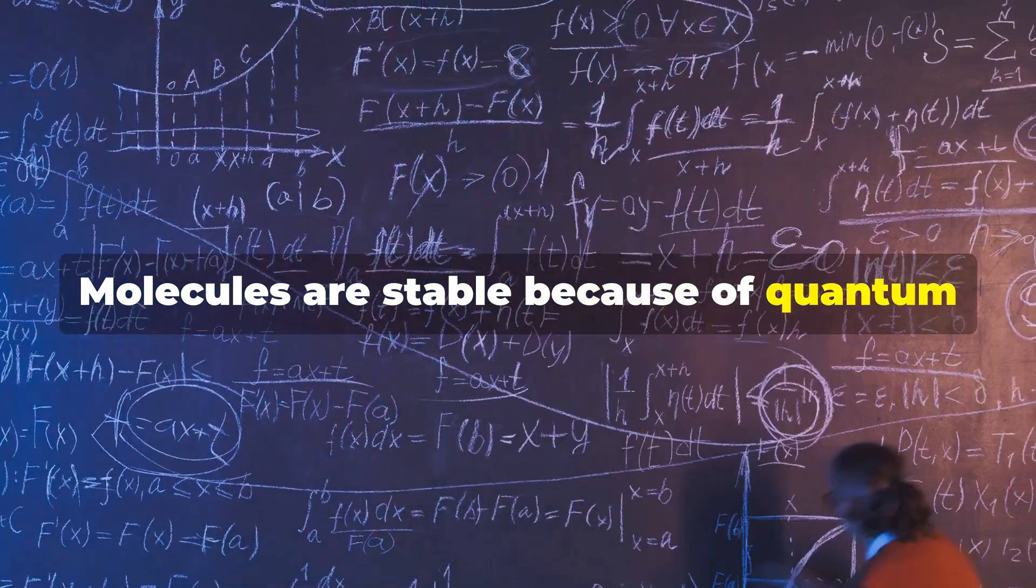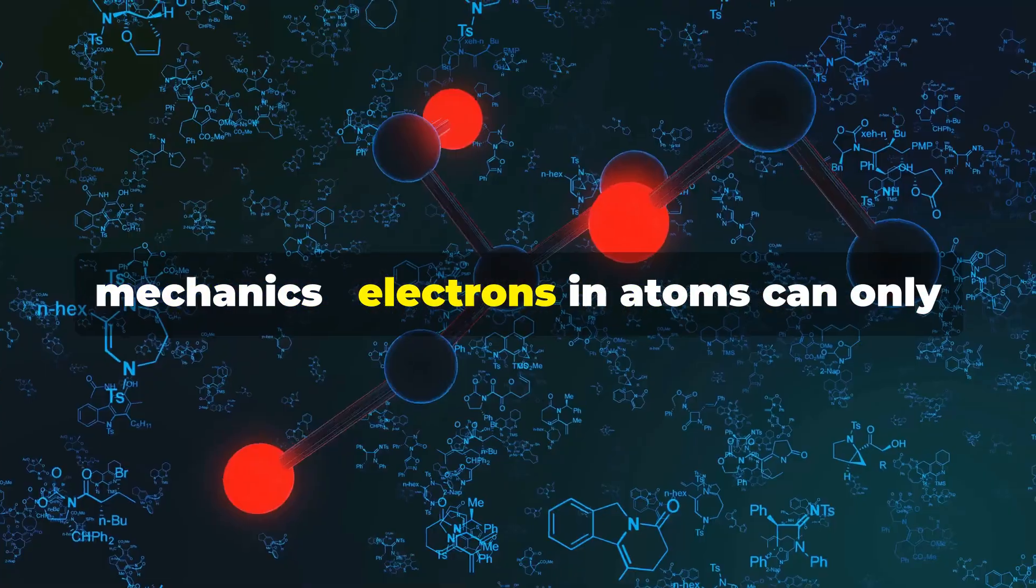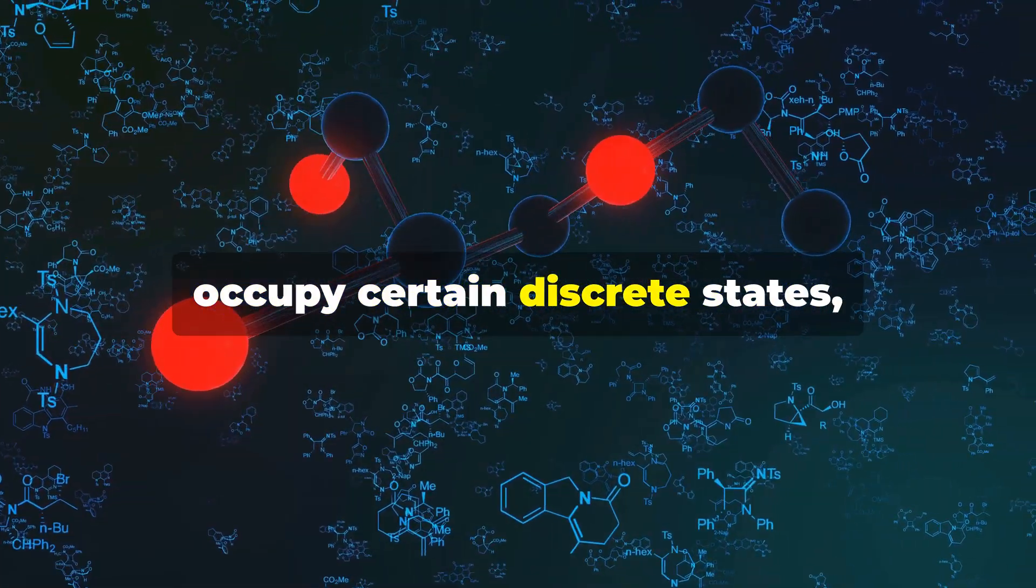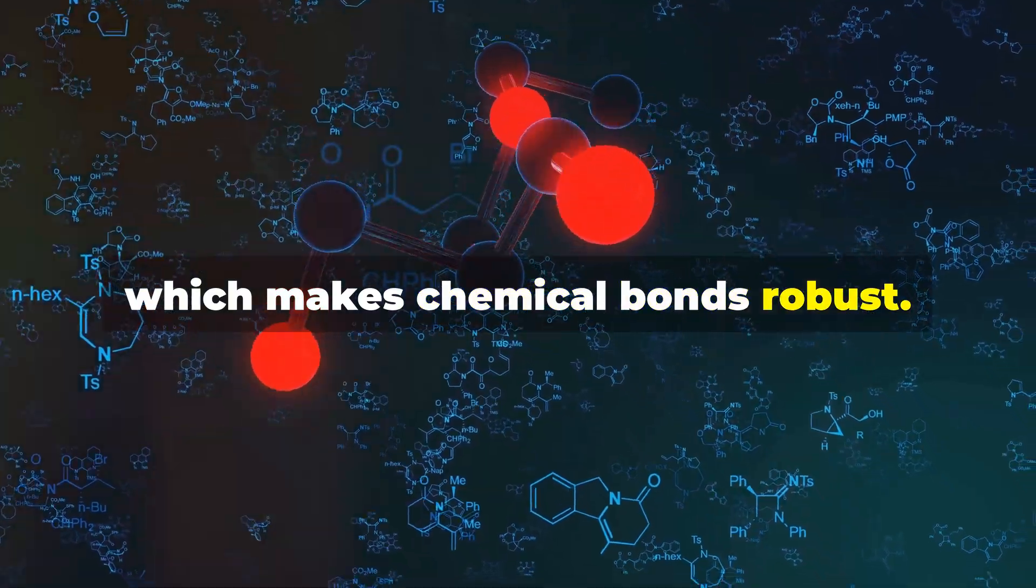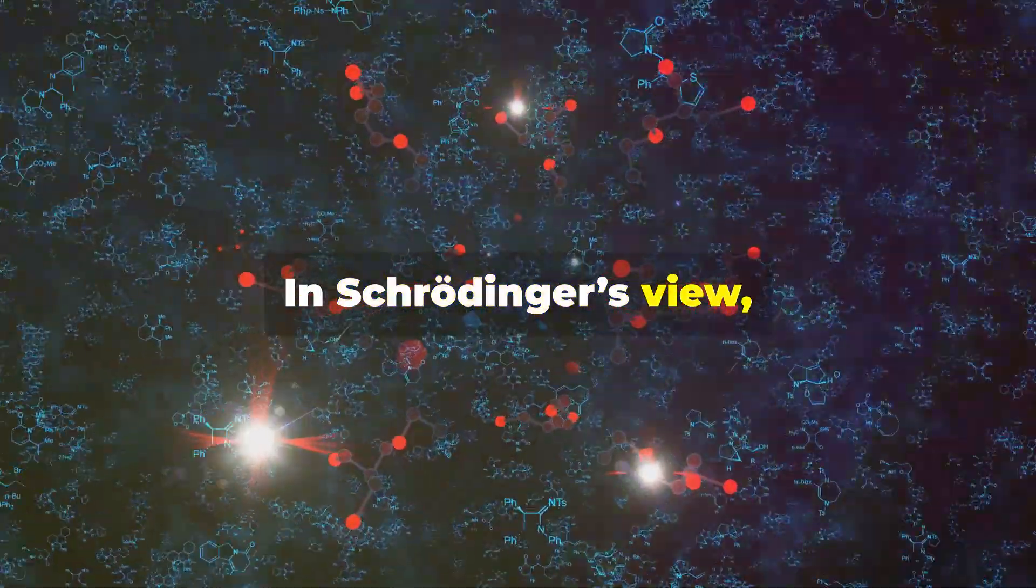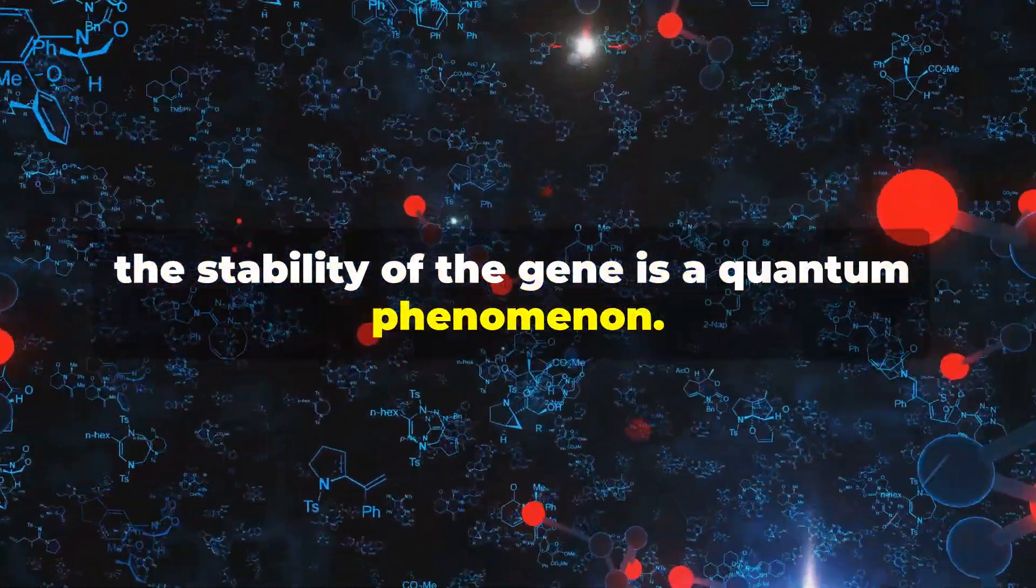Schrödinger argued that quantum theory holds the key. Molecules are stable because of quantum mechanics. Electrons in atoms can only occupy certain discrete states, which makes chemical bonds robust. In Schrödinger's view, the stability of the gene is a quantum phenomenon.